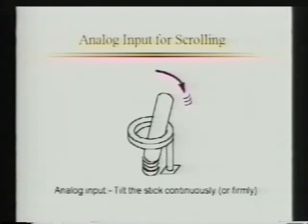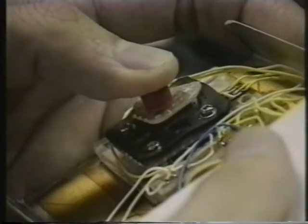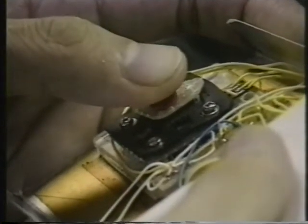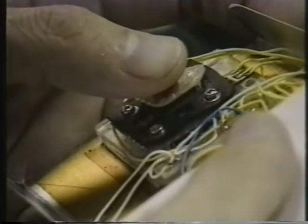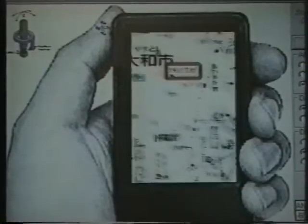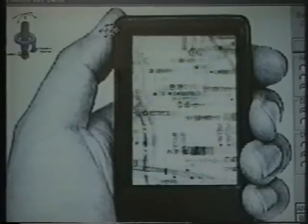For hypermedia browsing, a user first scrolls the screen to find a desired object. A continuous strong force is regarded as an analog input and moves the displayed image with arbitrary direction and speed.